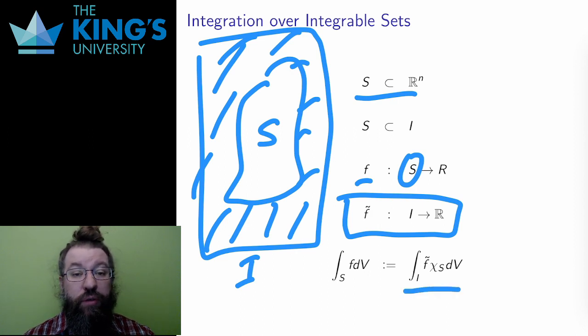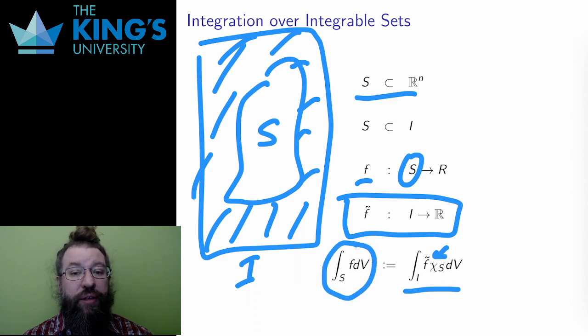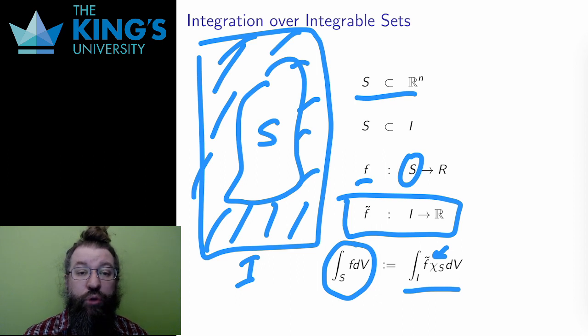Then I integrate f̃ over I, multiplying by the characteristic function to effectively limit the integral to the set S. This is the formal solution to integrating over a general set.